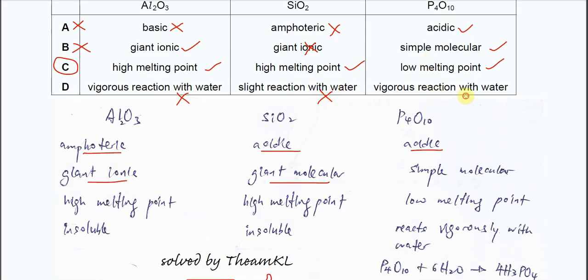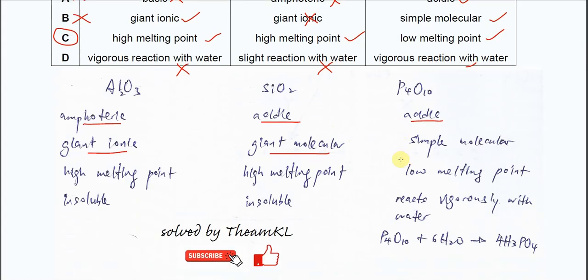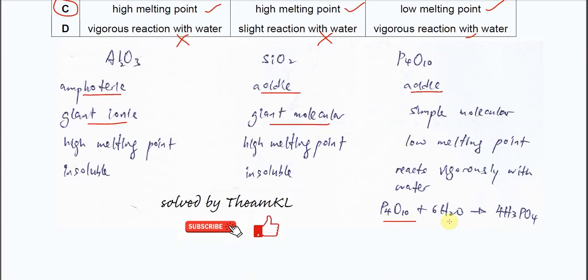The P4O10 will react with water. And this is the equation. Phosphorus oxide reacts vigorously with water to form phosphoric acid.